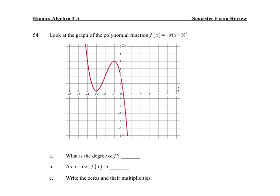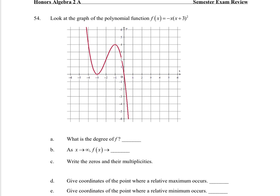For a, the degree is going to be odd because the end behaviors are in opposite directions. I can see based on the polynomial we have x squared and another x, so that is three. The zeros are x equals -3 and x equals 0. The multiplicity, so for x equals -3, that has a multiplicity of 2, and x equals 0 has a multiplicity of 1.